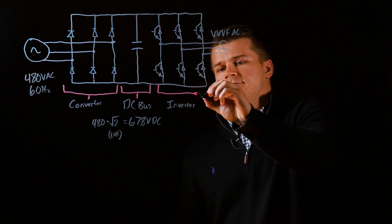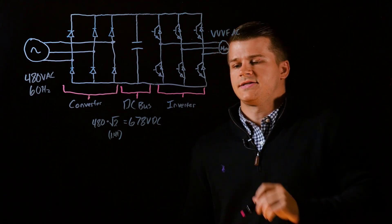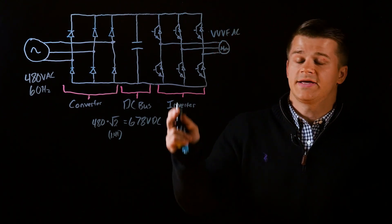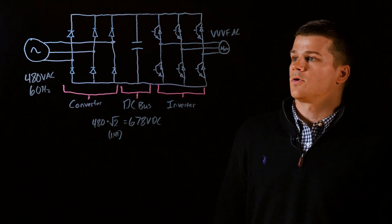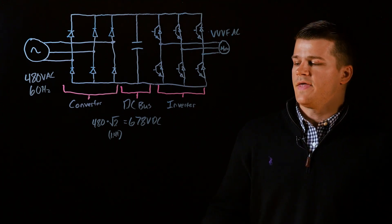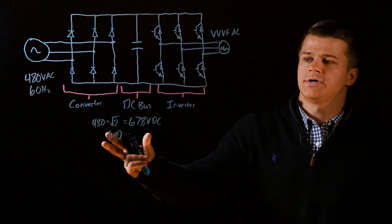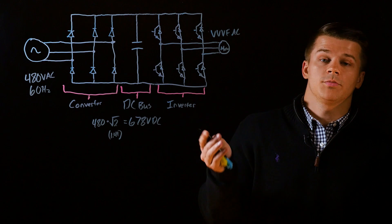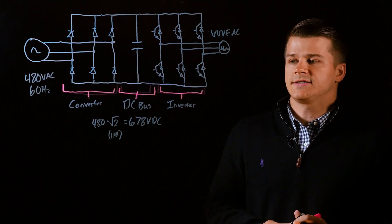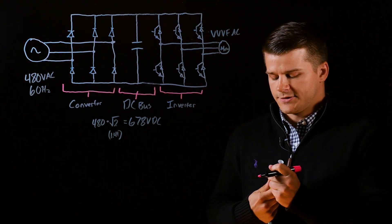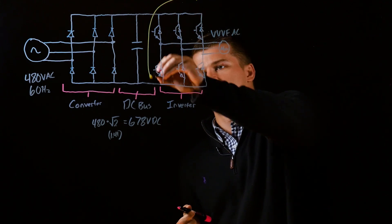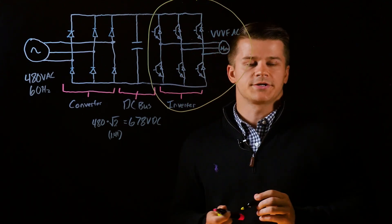So your final section is the inverter section that has six insulated gate bipolar transistors or IGBTs, and that takes your DC bus voltage and converts it back into a variable voltage variable frequency AC output to the motor. And so now we'll go into a little bit more detail on this inverter section.